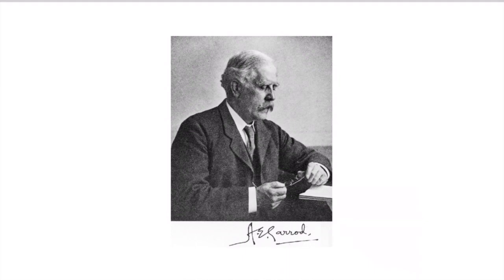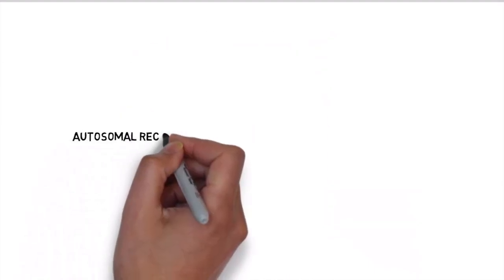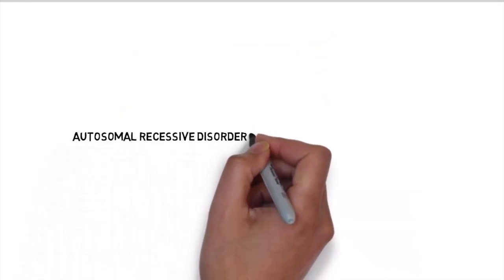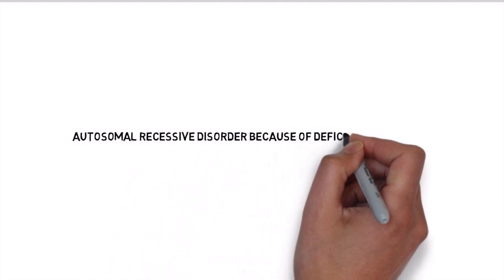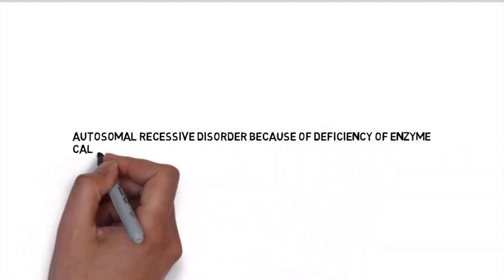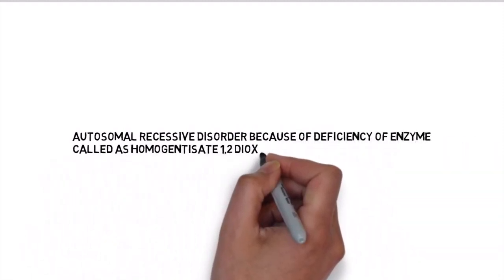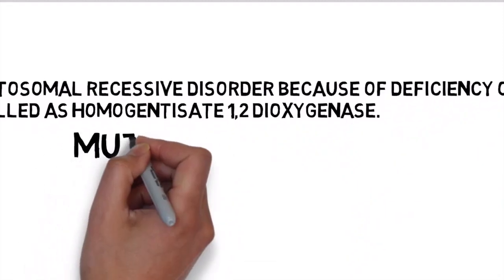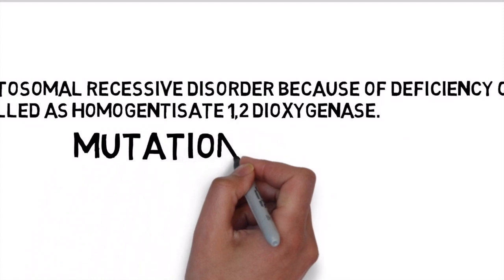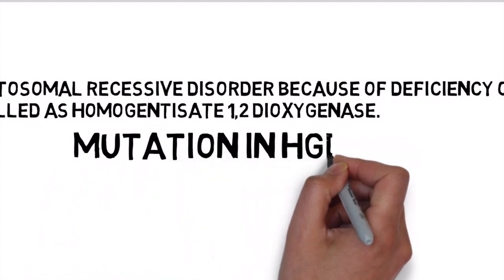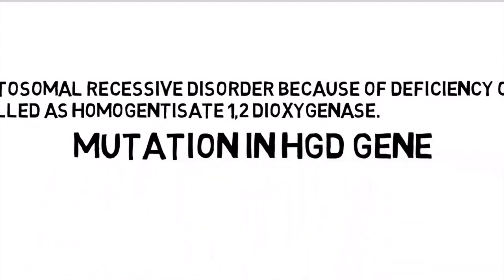Alkaptonuria is an autosomal recessive disease caused by deficiency of an enzyme called homogentisic acid dioxygenase. This deficiency is caused by a mutation in a gene called HGD — homogentisic acid dioxygenase.